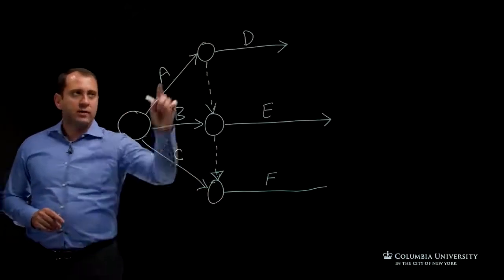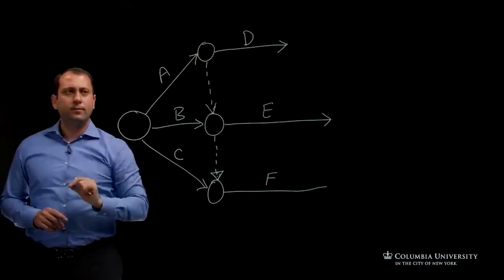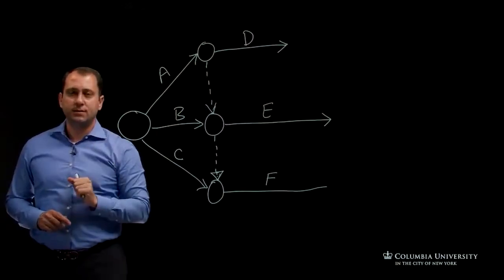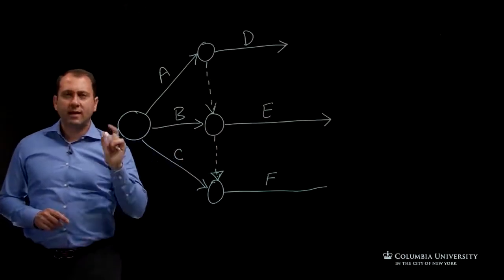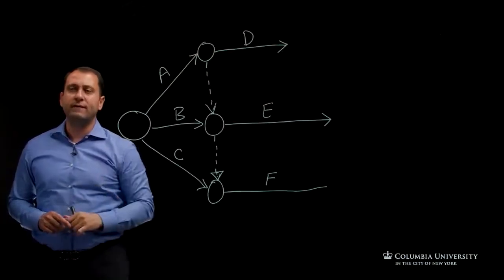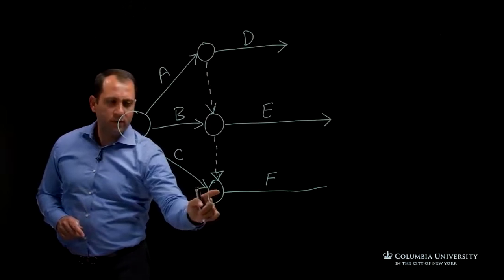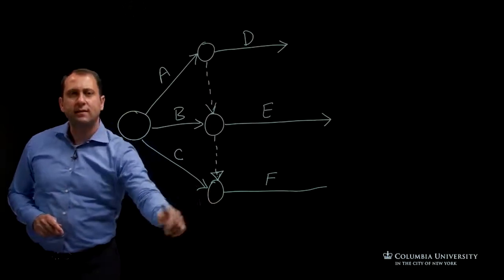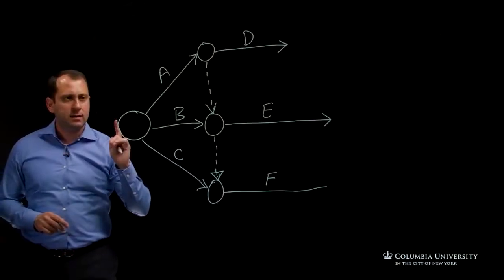So this node represents that point in time when activity A finishes. This node represents that point in time in the project when activity A and B finish. This point or this node represents a point in time also when activity A and B finish.